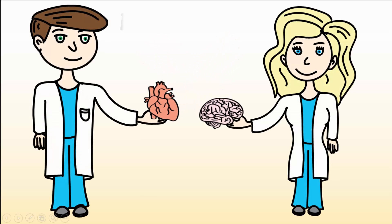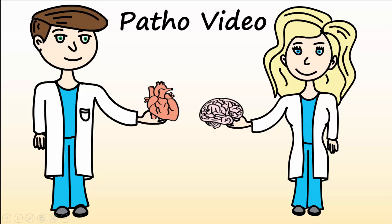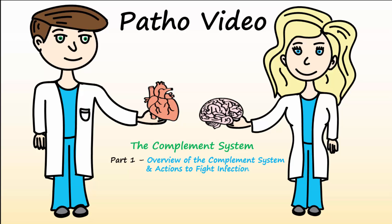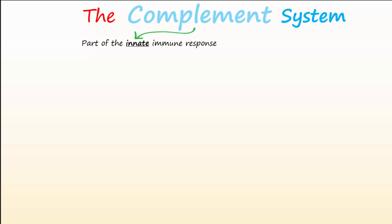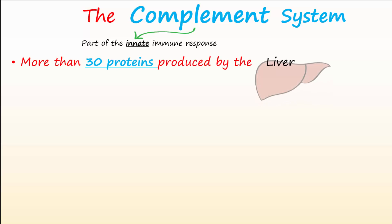Welcome to another patho video. This video begins a two-part video series entitled the complement system. Today let's talk about what the complement system is and how it helps fight infections in the body. The complement proteins are an important part of the body's innate immune response. The system of proteins is so named because it helps or complements the body's immune system in fighting infections.